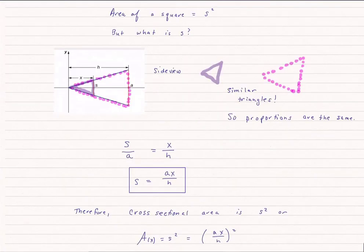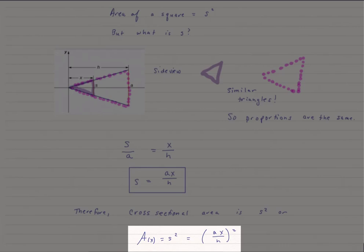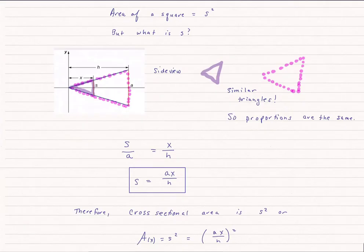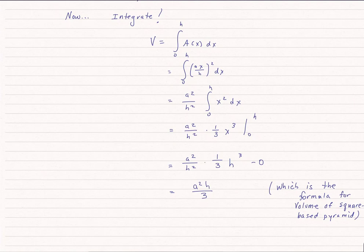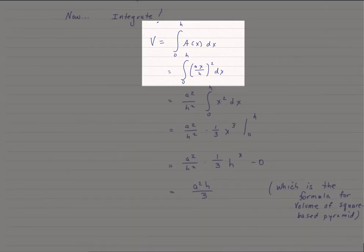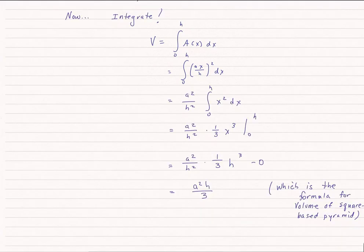Therefore, the cross-sectional area, which I know is s squared, is simply (ax/h) squared. Our last step is now to integrate. This is usually the easiest part of this process. So I take the volume going from zero to h, the height of our final pyramid, of A(x) dx. I know A(x) is (ax/h) squared, and I go ahead and do that integration, and I find out that the volume of a square-based pyramid is a² h/3, which is our known formula. So again, it's nice to do an example where you already know the answer.